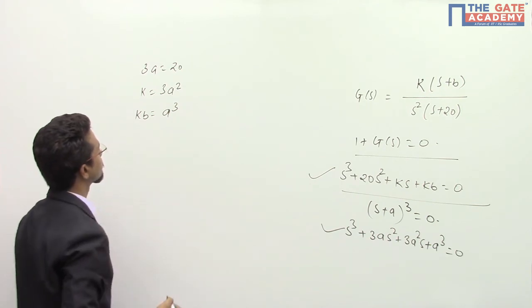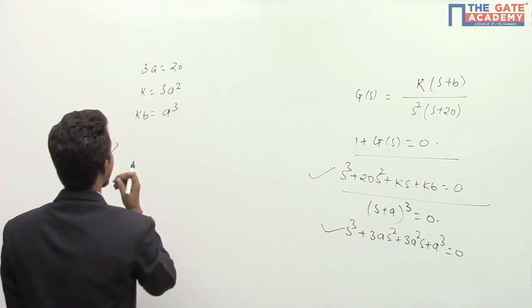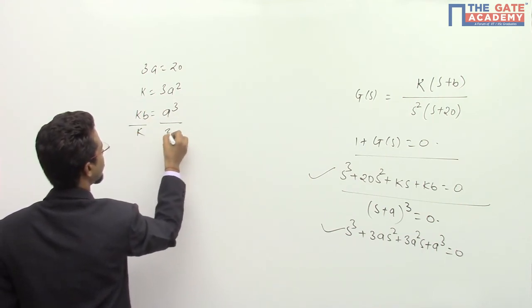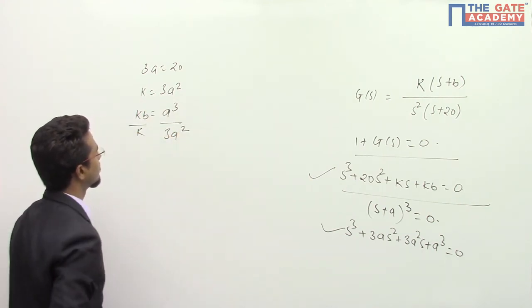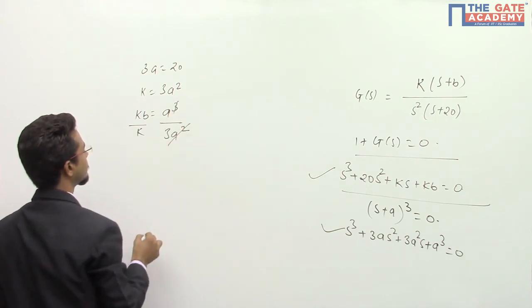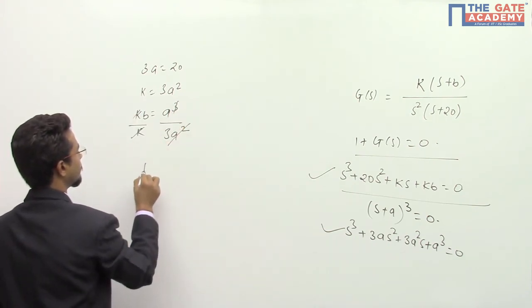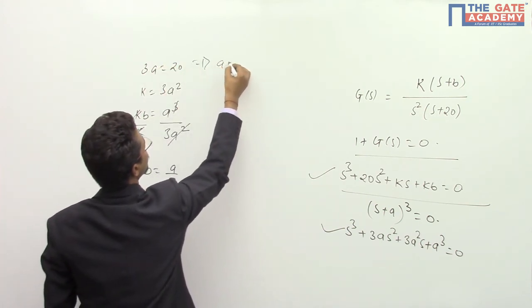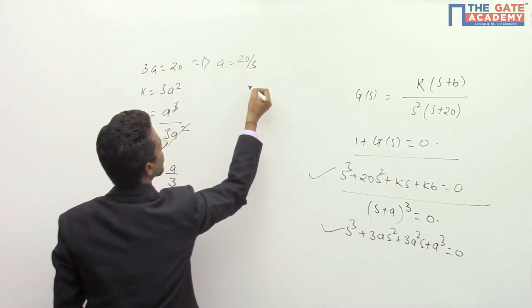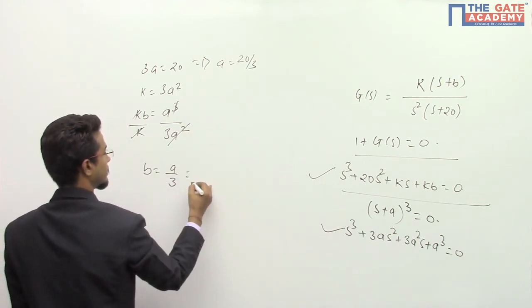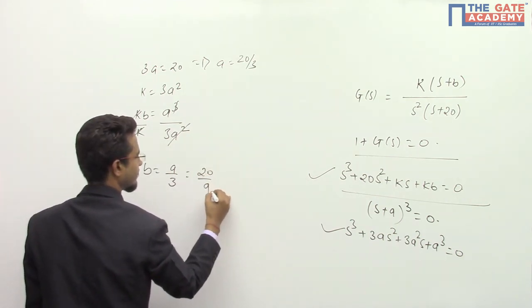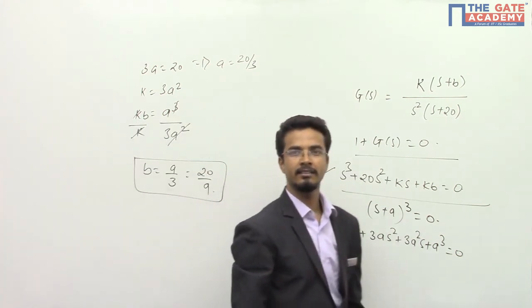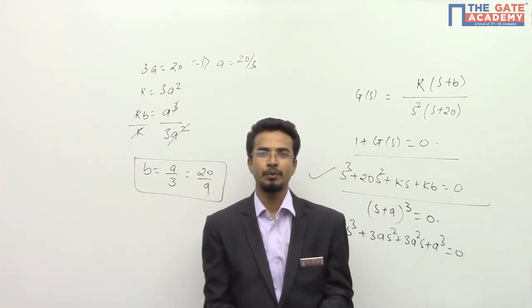If I take the ratio from here, K divided by 3 a square, this will cancel out and K will cancel out, so B equals a by 3. And from here I can say a equals 20 by 3. Just put the value here so then you will get 20 by 9, as simple as that.